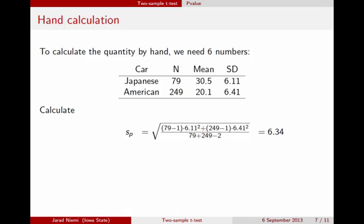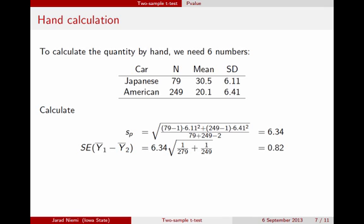We can do the calculation by hand if we want to. We need six numbers: the total sample sizes — 79 Japanese cars and 246 American cars — the group means — 30.5 MPG for Japanese and 20.1 for American — and the standard deviations — 6.11 for Japanese and 6.44 for American. The pooled standard deviation is 6.34, the standard error of the difference in averages is 0.82, and the t-statistic is 12.6.